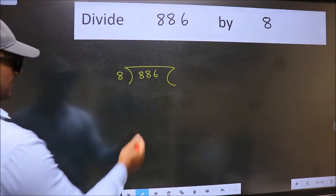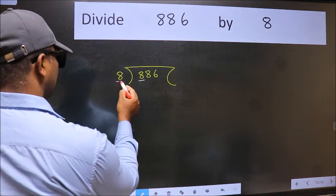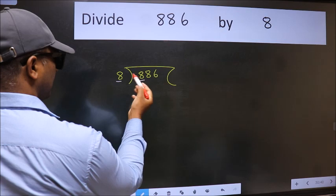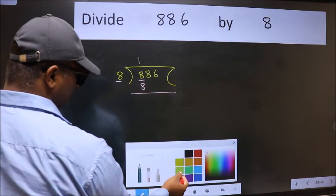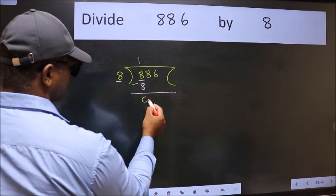Next, here we have 8 and here 8. When do we get 8 in 8 table? 8 once, 8. Now we should subtract. We get 0.